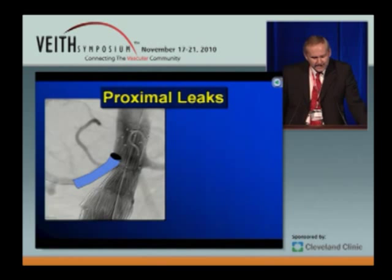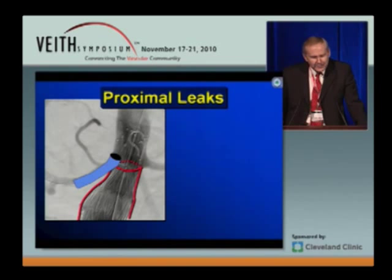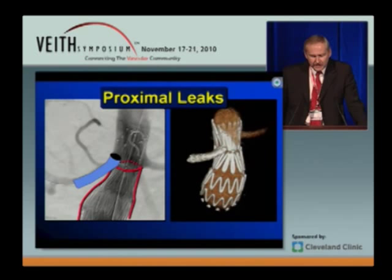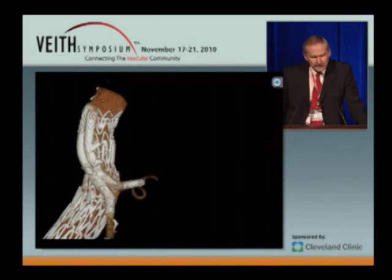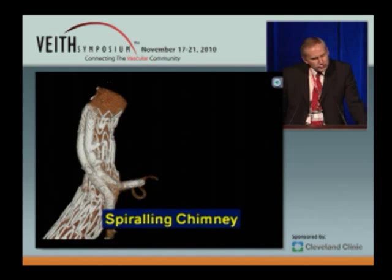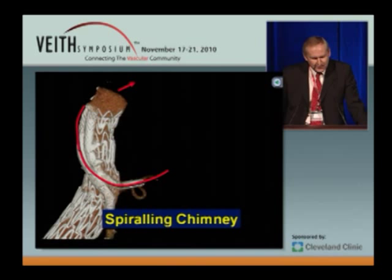If you place a chimney that barely extends into the neck and a stent graft that barely reaches the neck, then over time that chimney graft is likely to fall down into the aneurysm and an endoleak will ensue. So what I think is needed is longer chimney grafts that really extend into a neck above the aneurysm. If you use longer chimney grafts, the chimney kind of spirals around the aortic component rather than running parallel to it.